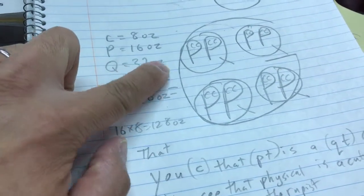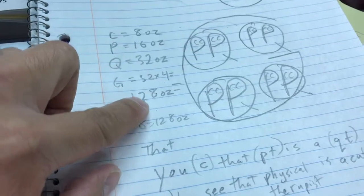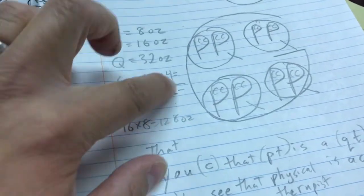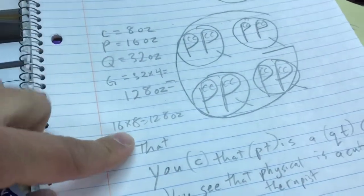And with quarts, there's 32 ounces per quart. 32 times 4 is 128 ounces. And so we used those mnemonics in the conversion and listed it this way in our notebook.